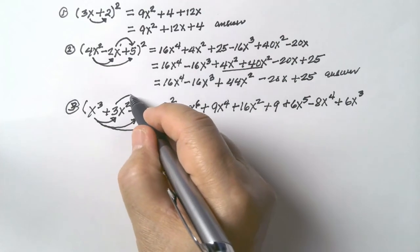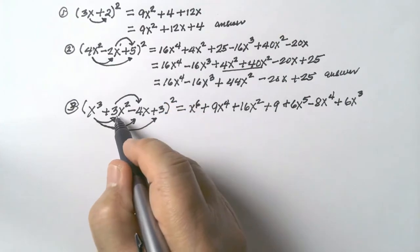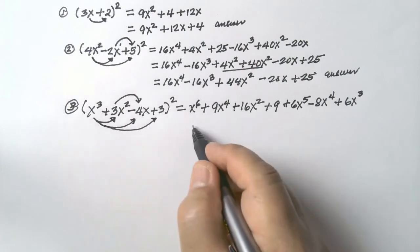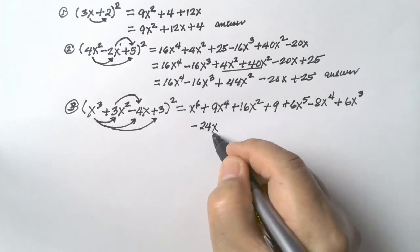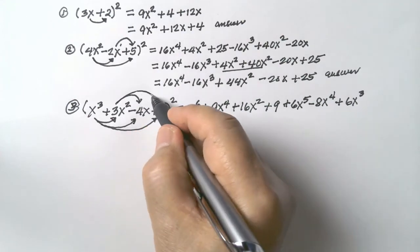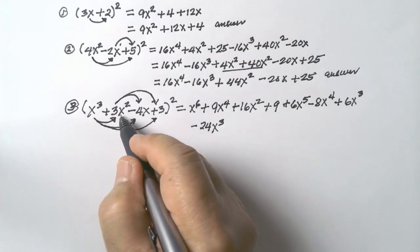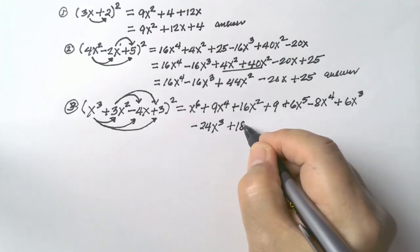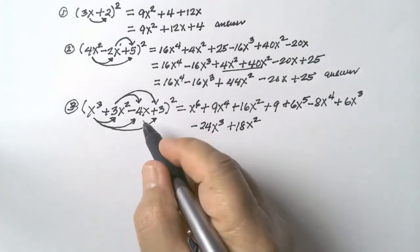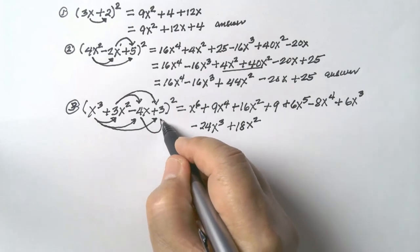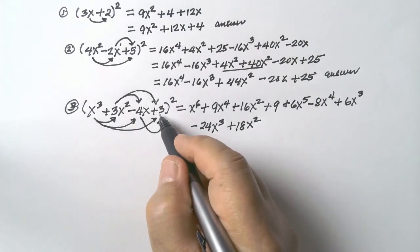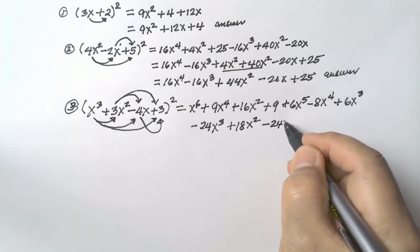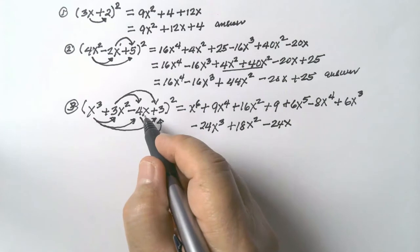Then go to the second term. 3x squared times negative 4x = negative 12x cubed, times 2 = negative 24x cubed. Then 3x squared times 3 = 9x squared, times 2 = positive 18x squared. And negative 4x times 3 = negative 12x, times 2 = negative 24x. After distributing the second-to-last term, stop.